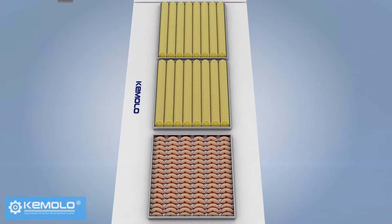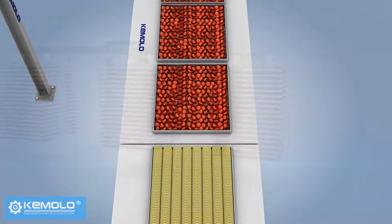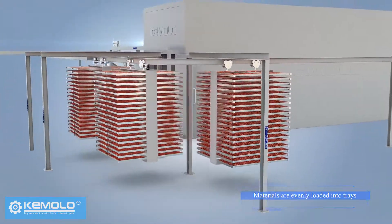First, wash and slice the fruits, vegetables or other pre-processed materials evenly and load them into product trays.